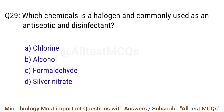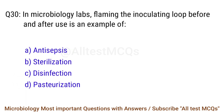Q29. Which chemical is a halogen and commonly used as an antiseptic and disinfectant? The right answer is option A: Chlorine. Q30. In microbiology labs, flaming the inoculating loop before and after use is an example of? The right answer is option B: Sterilization.